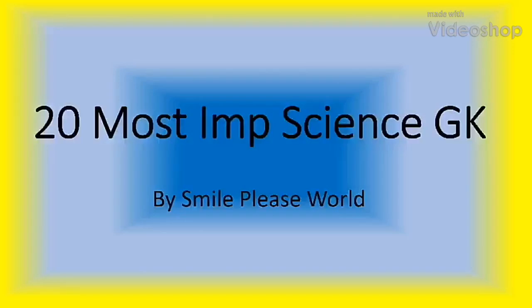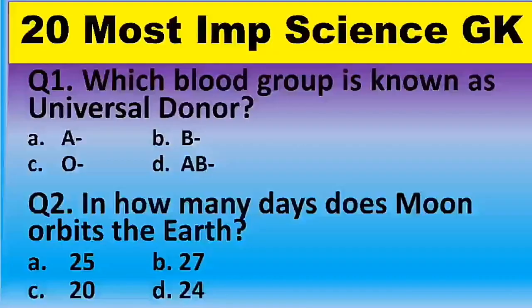Question 1: Which blood group is known as universal donor? Options are: A negative, B negative, O negative, and AB negative. The correct answer is option C: O negative.